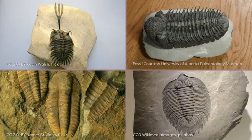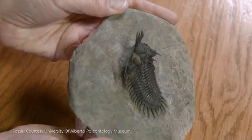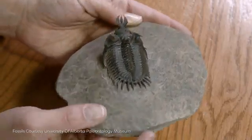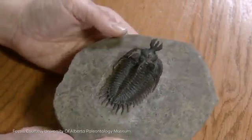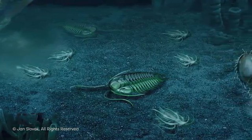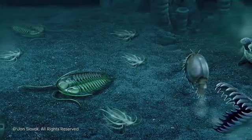Trilobites were one of the dominant arthropod groups present throughout the Cambrian period, and even survived until the end of the Permian period, some 280 million years later. Fossil records show that many trilobite species had spiny exoskeletons, likely used for defensive purposes. They also had distinct body segmentation and jointed legs. Despite their diversity and abundance, trilobites, like all animals that lived during the Cambrian period, lived solely in marine environments.